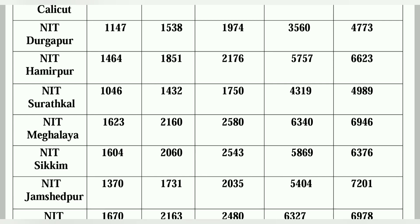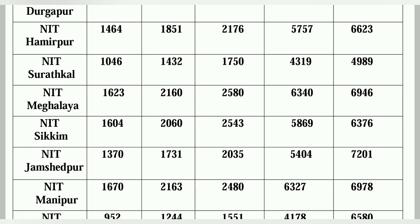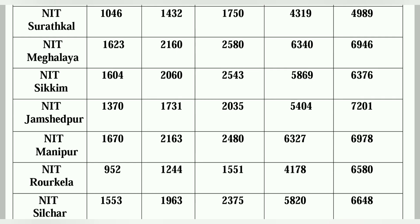NIT Jamshedpur is a good institute in CCMN counselling — General around 1300, EWS is 1731, OBC is 2035, SC is 5400, ST is around 7200. NIT Manipur: General is 1670, EWS is 2163, OBC is 2480, SC is 6327, ST is 978.